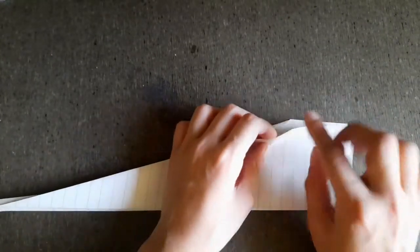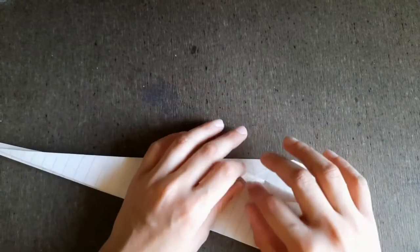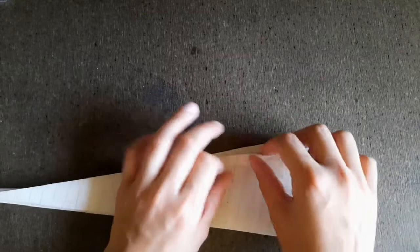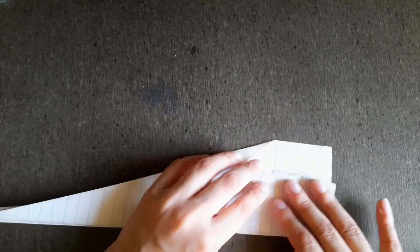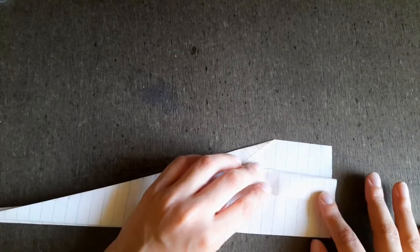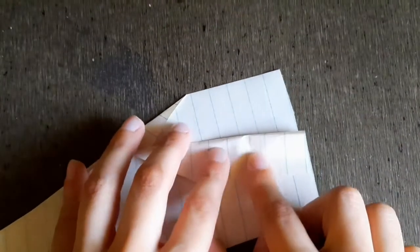Fold this edge behind so that this edge is perpendicular like that. This edge should cross over a little bit so that it forms a small triangle here.